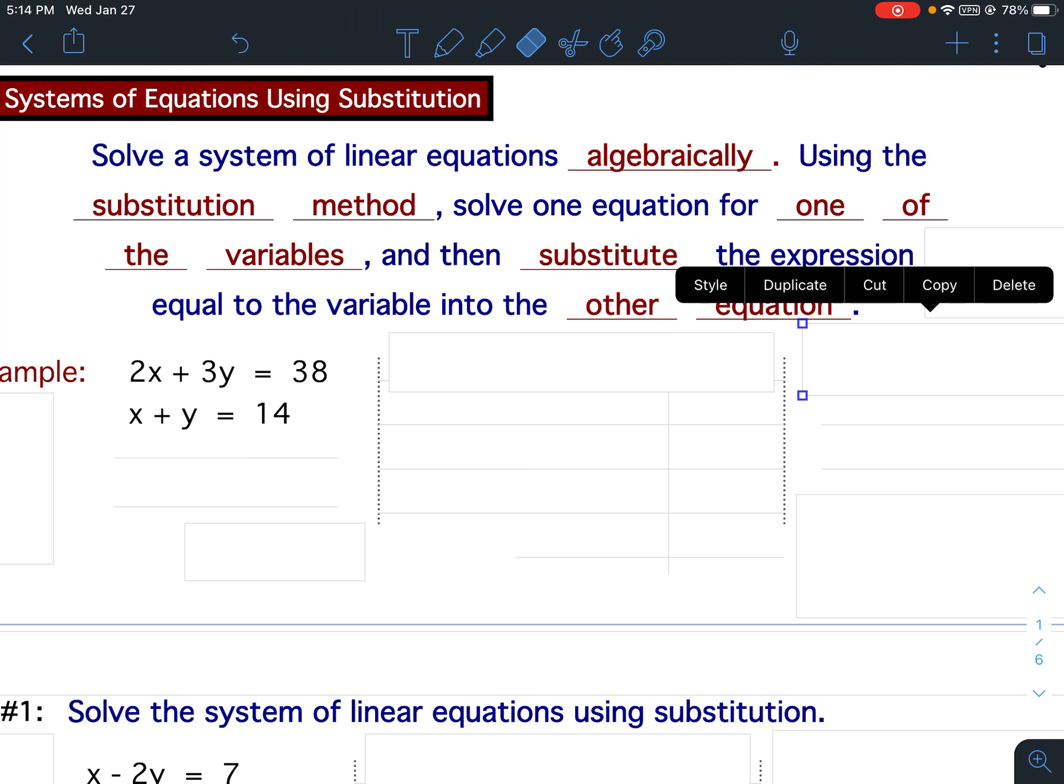Okay, so when we were graphing, you always had to solve for y because the equations had to be in slope-intercept form. So when graphing, we always had y equals and then the equation. So y equals mx plus b so we could graph. With substitution, it doesn't matter which variable you solve for. If x is the easier variable, then you'll solve for x. If y is the easier variable, you'll solve for y.